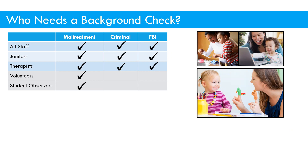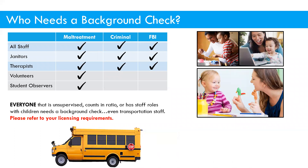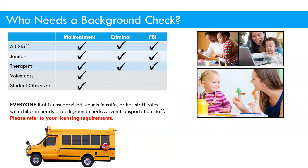Volunteers and student observers are in a gray area, depending on how much those volunteers are involved. If they're there every day, in a supervisory role, or counted in ratios in any way, additional checks apply. The same goes for student observers — whether it's a one-time class visit or an everyday placement makes a difference.